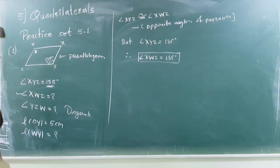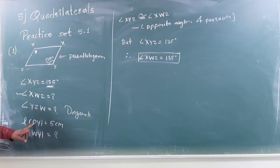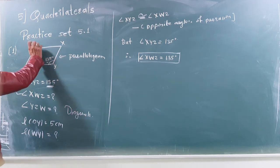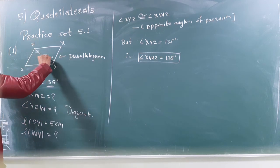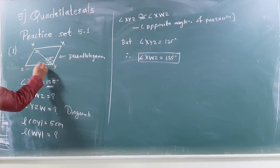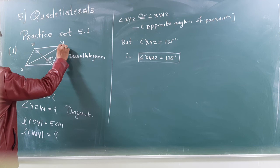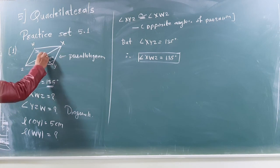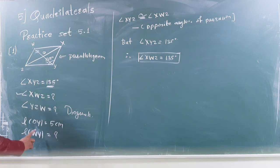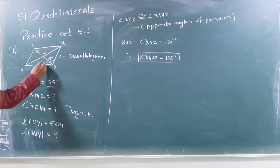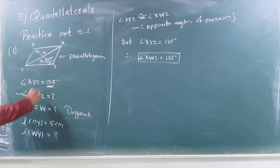Now, second question. If we know, the OY is 5 cm. When OY will form? When the two diagonals, diagonals WY and diagonals XZ will intersect at point O. So, that time, the OY will form as 5 cm.